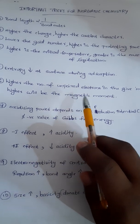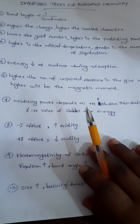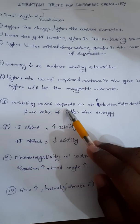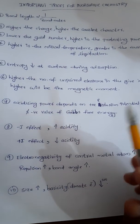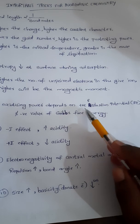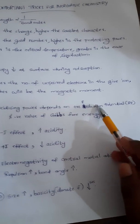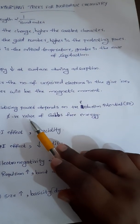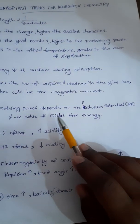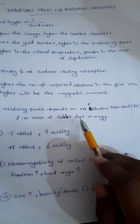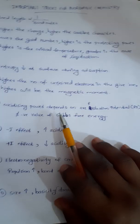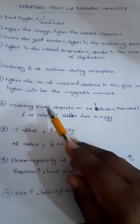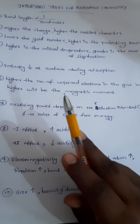Next point: oxidizing power depends on two things. One is positive reduction potential and the next one is negative value of Gibbs free energy. So oxidizing power depends on these two factors.